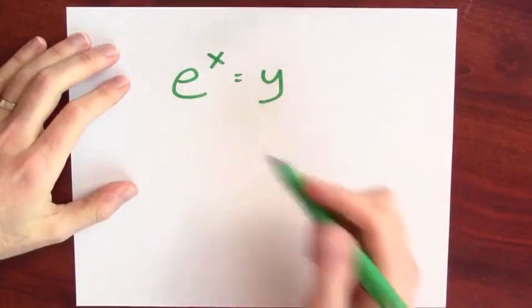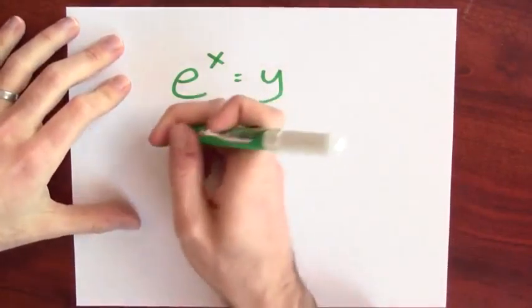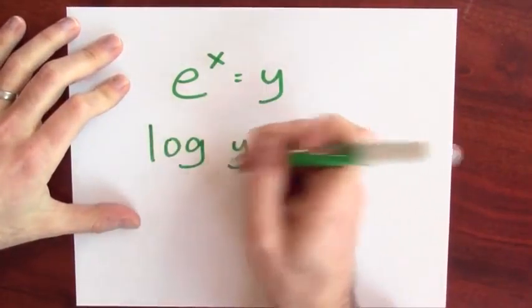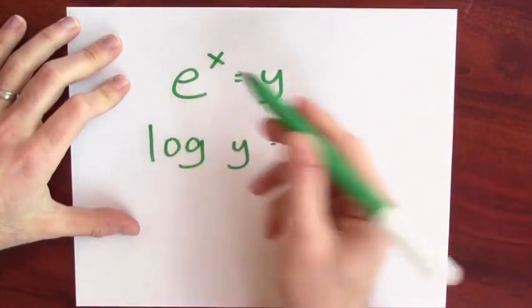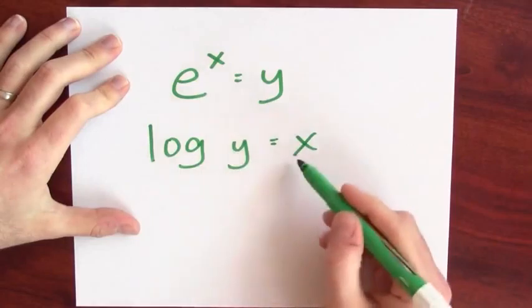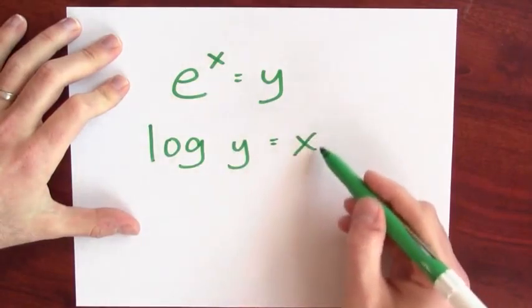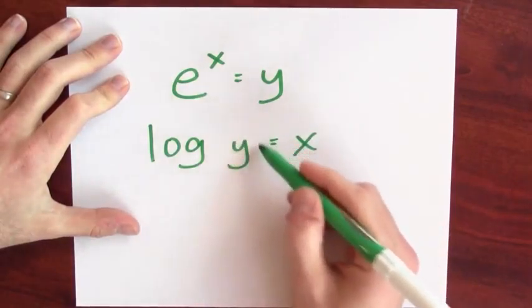Well, we don't really have a name for that function yet, so we're just going to call it log. So in symbols, if e to the x equals y, then log y equals x. Log is the inverse function for e to the. Log of something tells me what I must raise e to to get back the thing I plugged into log.